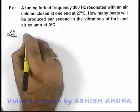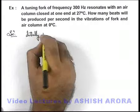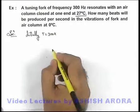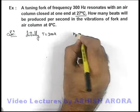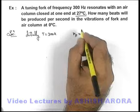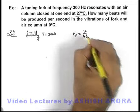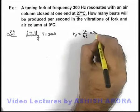In this situation we know initially it is given that temperature is 300 kelvin, which is 27 degrees centigrade. The frequency of tuning fork is equal to frequency of air column, which is closed at one end. Its fundamental frequency is written as v by 4l, and its value is given as 300 hertz.